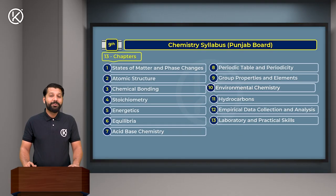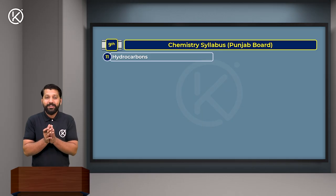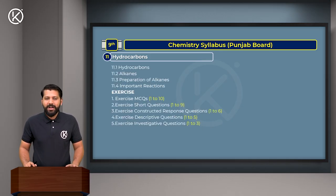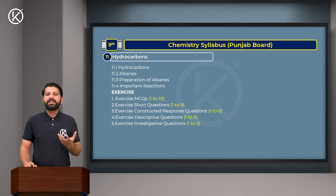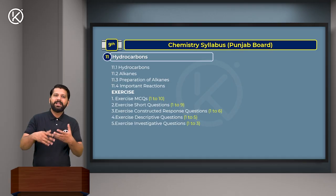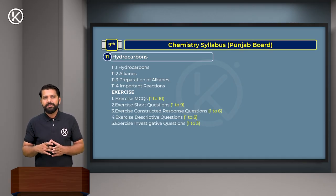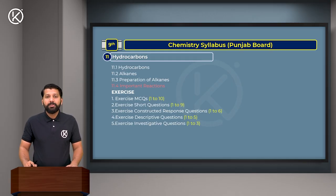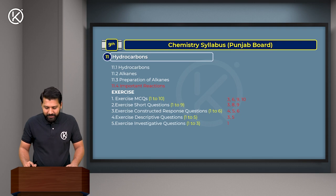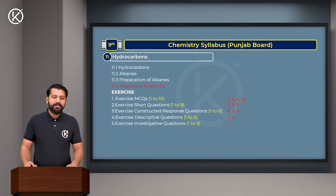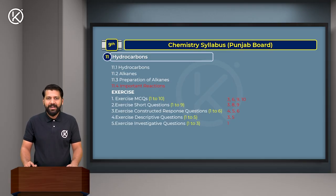Chapter 11 is Hydrocarbons. You will study compounds of carbon and hydrogen, concentrating on alkanes with single bonds between carbon atoms, alkenes with double bonds, and alkynes with triple bonds. You will also study the preparations and reactivity of alkanes. The excluded topic is 11.4 - Important Reactions. Excluded questions: MCQs 3, 6, 9, and 10; Short Questions 3, 8, and 9; Constructive Response Questions 4, 5, and 6; Descriptive Questions 3 and 5; and Investigative Question 1.